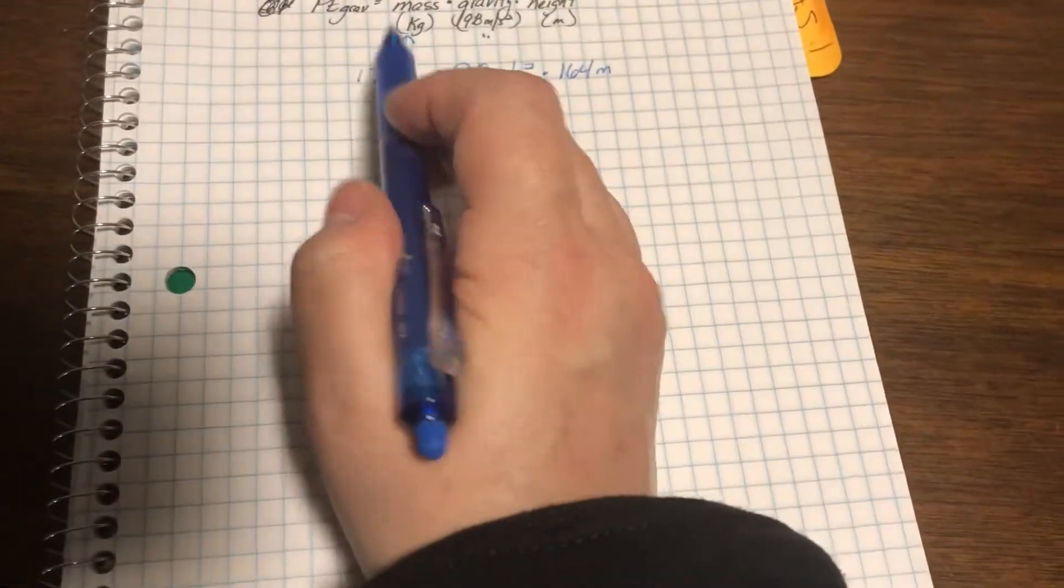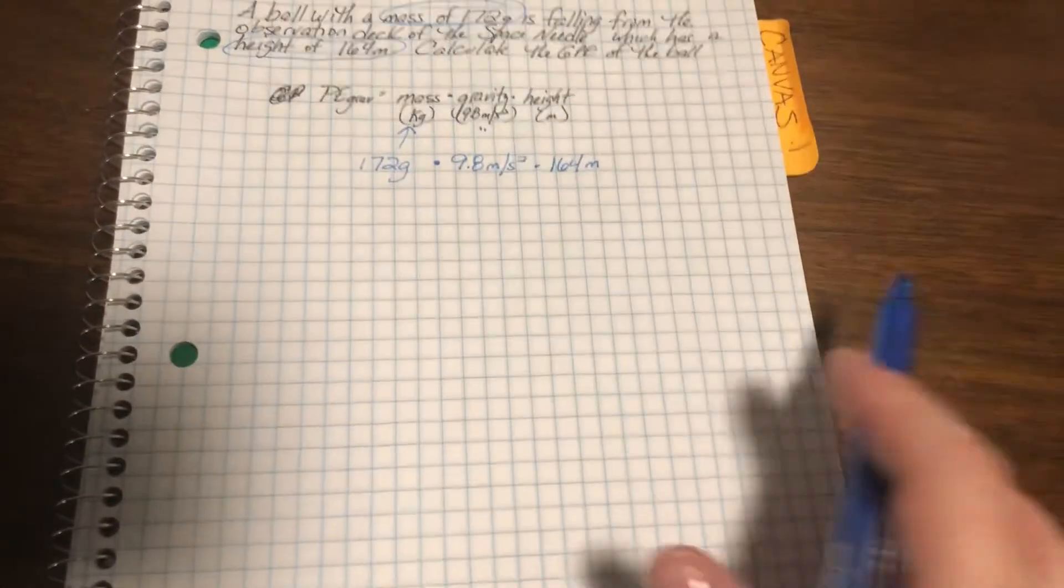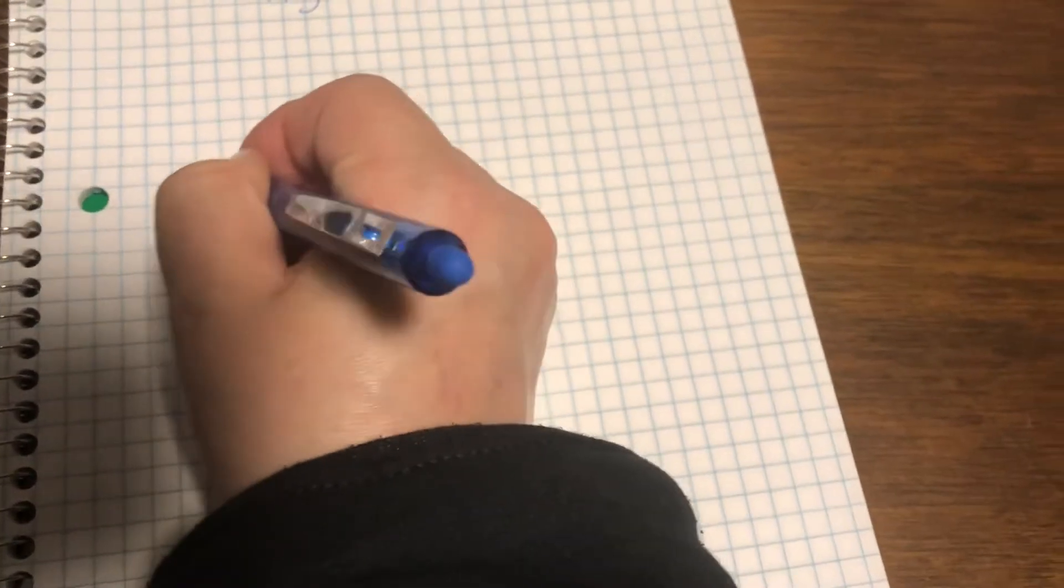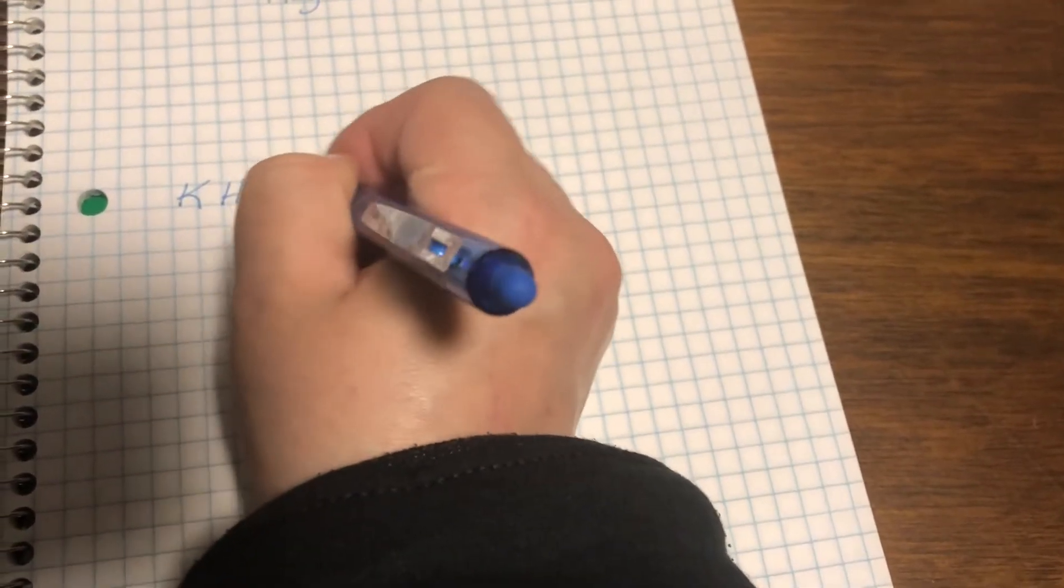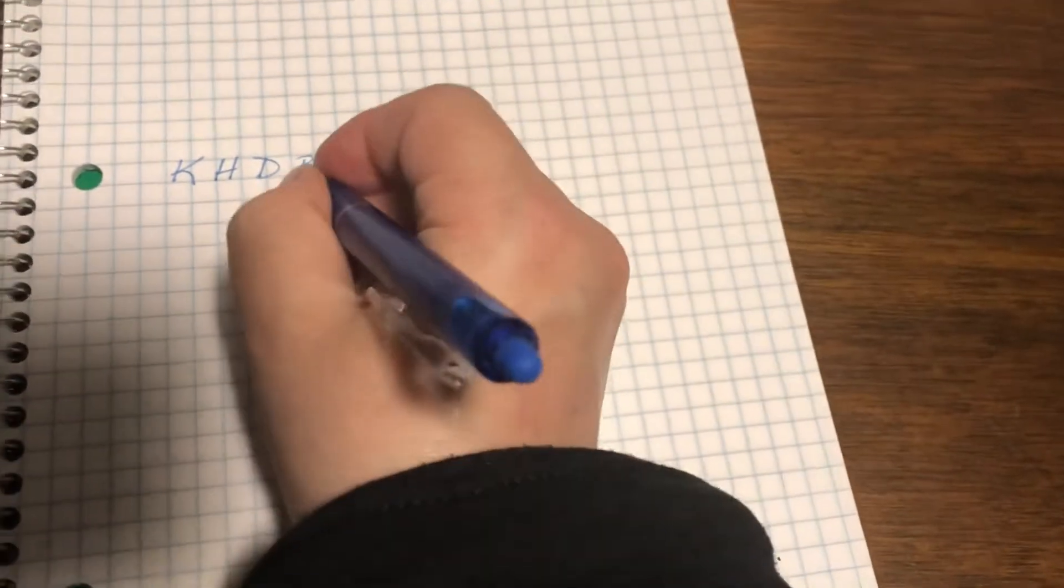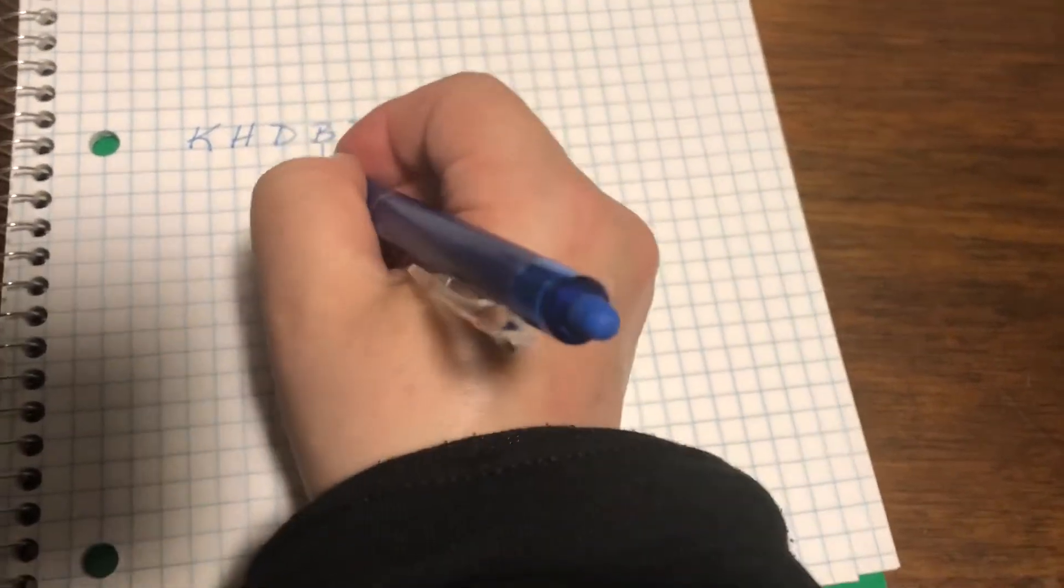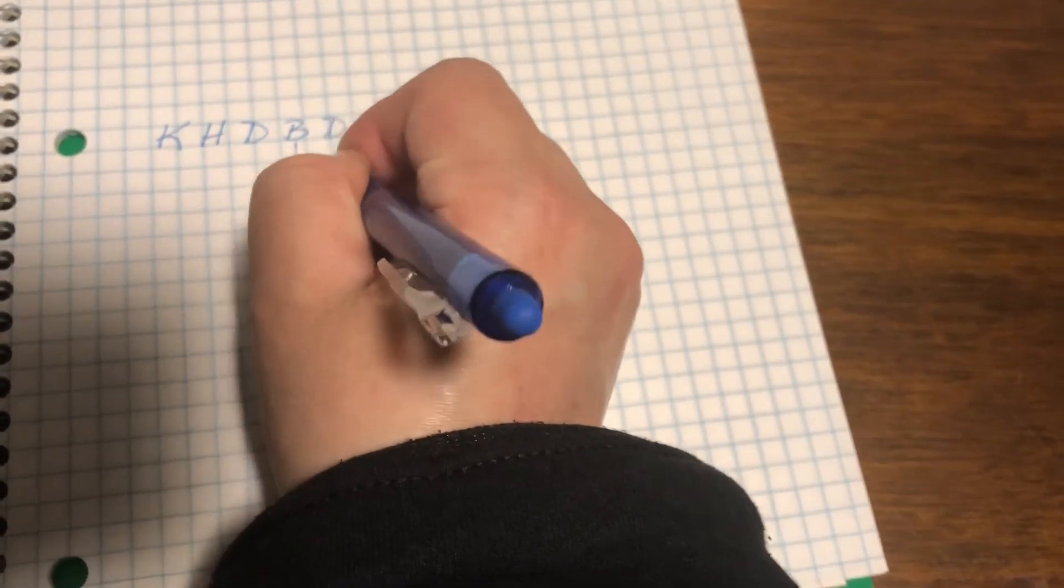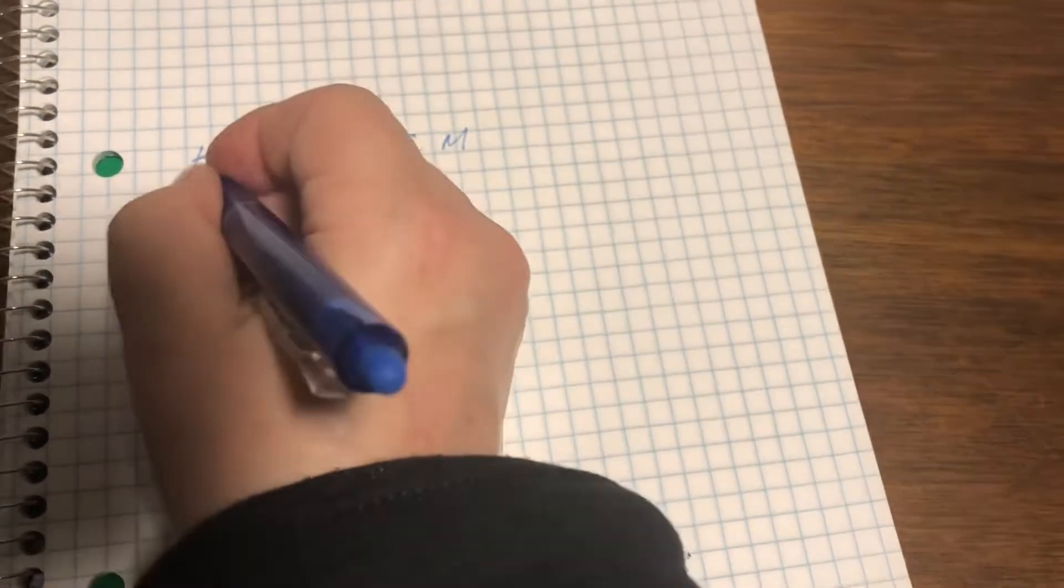Now, you have notes to help you keep your acronym straight. King Henry died by drinking chocolate milk. Base for mass is grams, right? And here's kilograms.